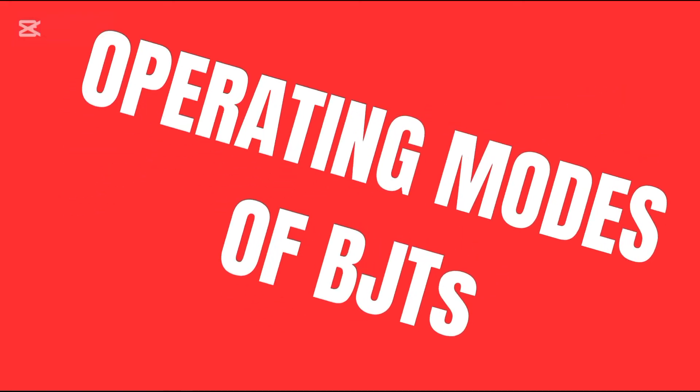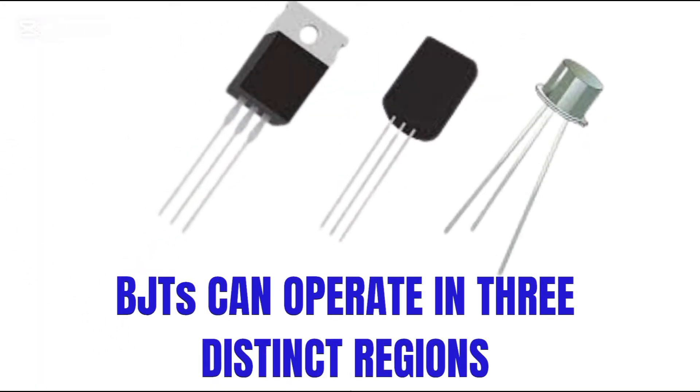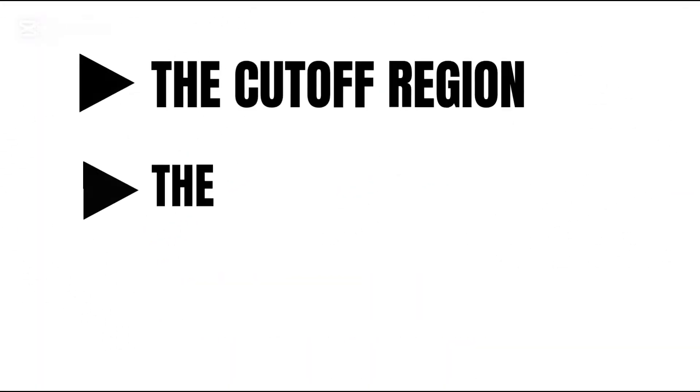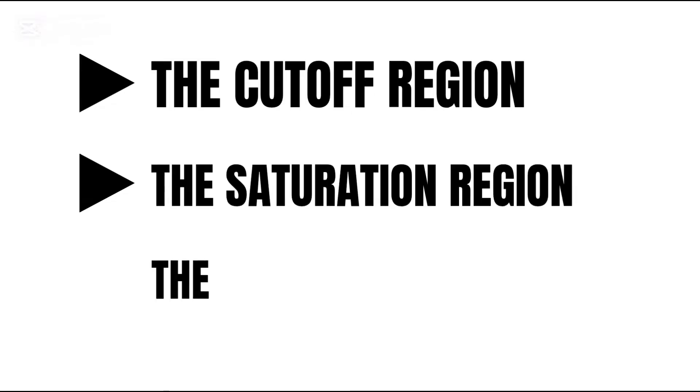Now let's talk about the operating modes of BJTs. BJTs can operate in three distinct regions, the cutoff region, the saturation region, and the active region.